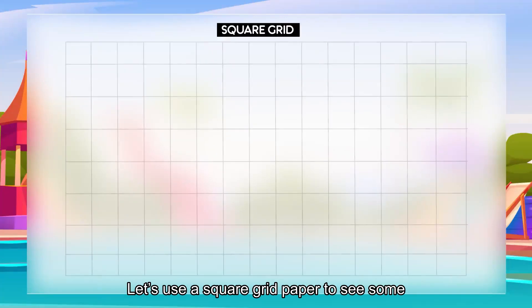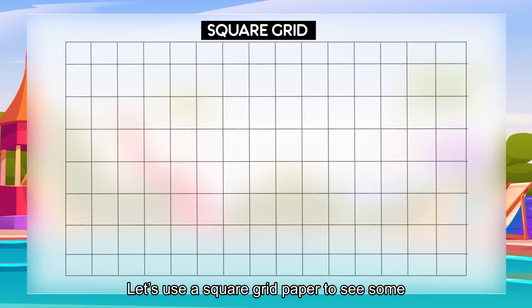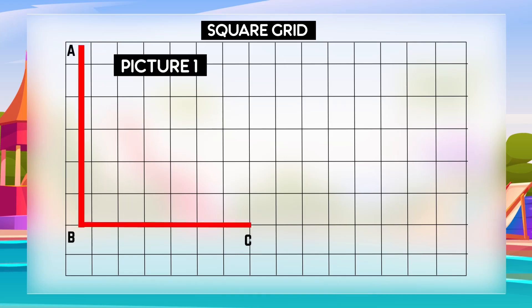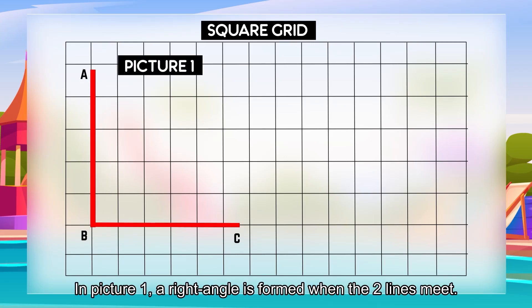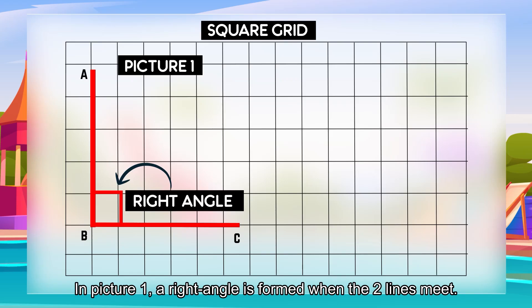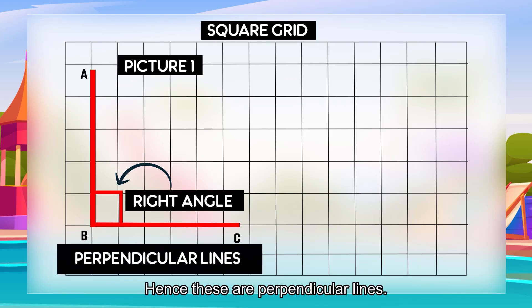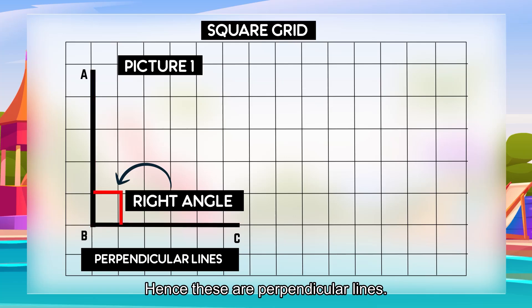Let us use a square grid paper to see some examples of perpendicular lines. In picture one, a right angle is formed when the two lines meet. Hence, these are perpendicular lines.